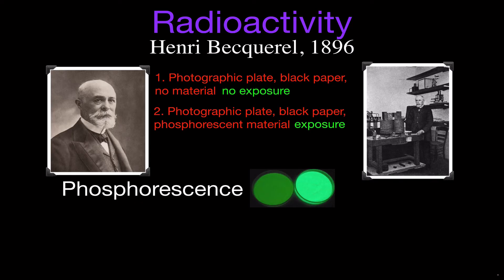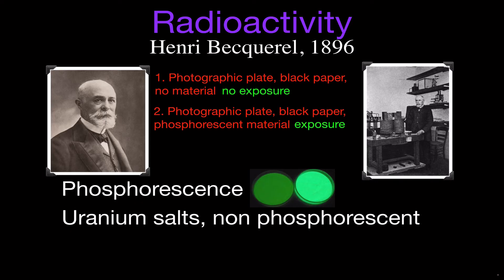So they were studying all these phosphorescent materials. And then he said, well, let's study some that don't actually phosphoresce in the visible spectrum, like uranium. If you have uranium, you expose it to light, you turn it off. It doesn't glow in the dark. So it's not phosphorescent. But maybe it gives off energy in the non-visible part of the spectrum, like maybe x-rays.